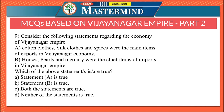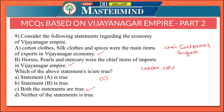The ninth question considers the economy of Vijayanagara Empire. Statement A says cotton clothes, silk clothes, and spices were the main items of exports; Statement B says horses, pearls, and mercury were chief items of imports. Both statements are true — Option C. Chief exports included iron, salt, saltpeter, sugar, cotton and silk clothes, and spices. Chief imports consisted of horses, pearls, copper, coral, mercury, China silk, and velvet clothes.